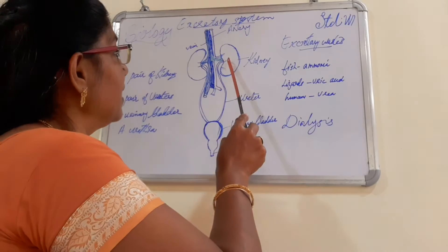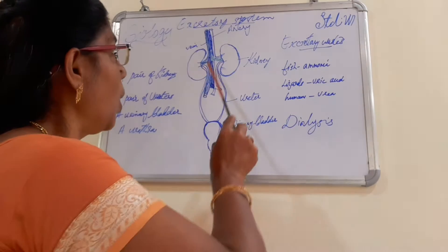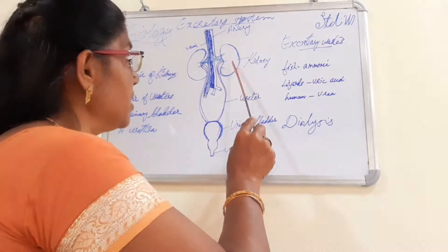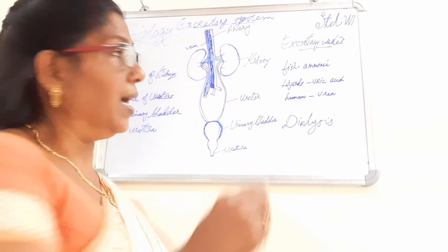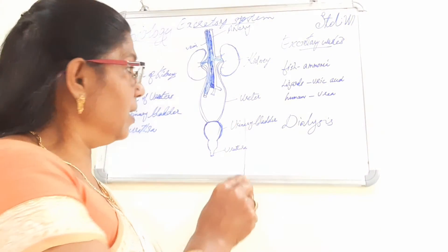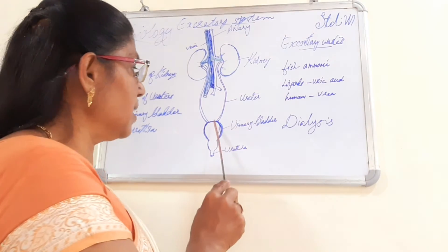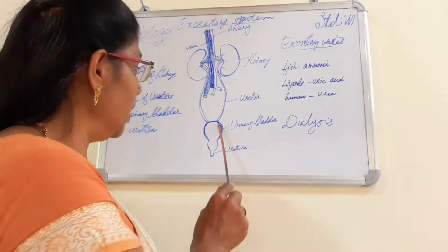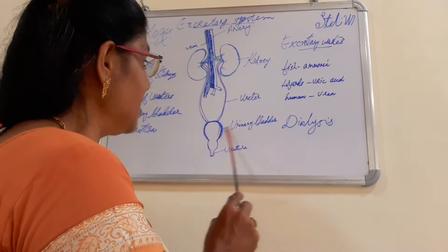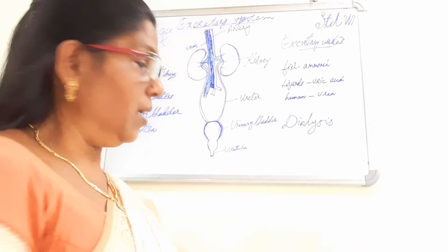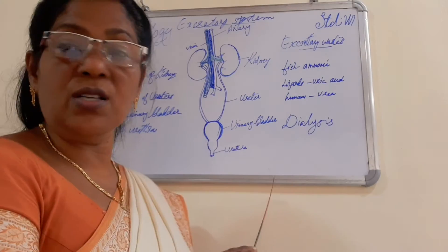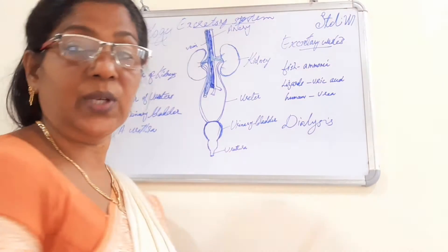From the kidneys arise two long tubes which collect the waste produced in the kidneys — these are called ureters. Both the ureters get attached to a large bladder-like organ which is known as the urinary bladder. From the urinary bladder arises a small tube which is known as the urethra.